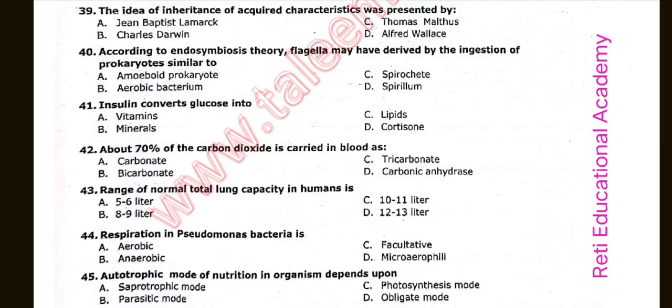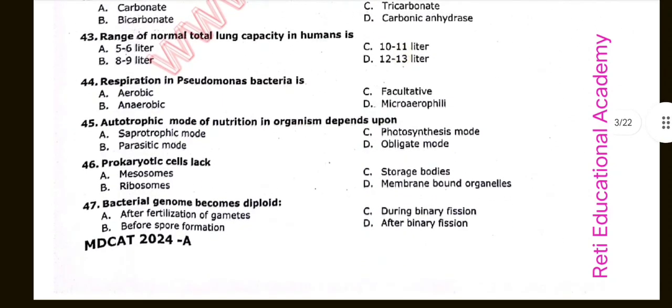Question number forty-three: Range of normal total lung capacity in humans is A: 5 to 6 liters. Question number forty-four: Respiration in Pseudomonas bacteria is aerobic. Question number forty-five: Autotrophic mode of nutrition in organisms depends upon. The correct option is C: Photosynthesis mode. Question number forty-six: Prokaryotic cells lack membrane-bound organelles. Option D is correct.